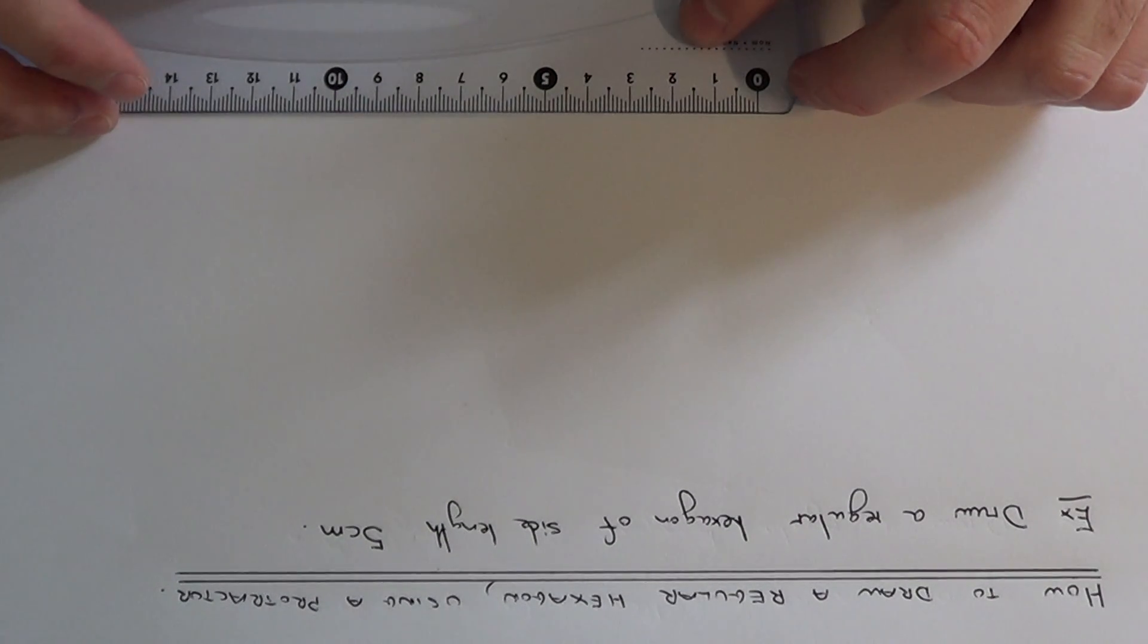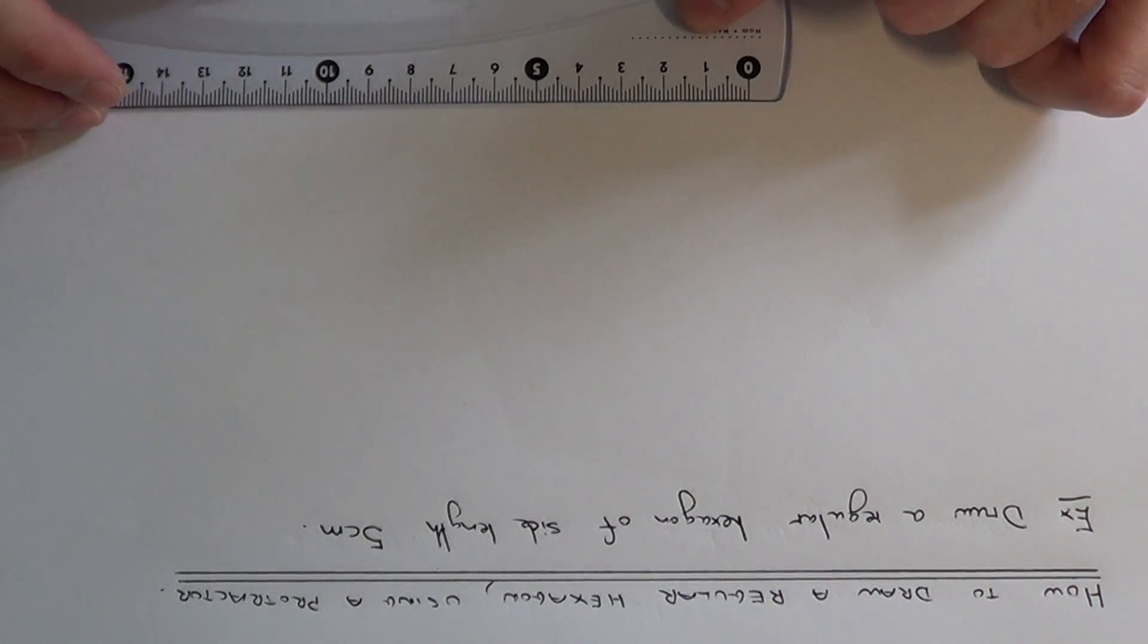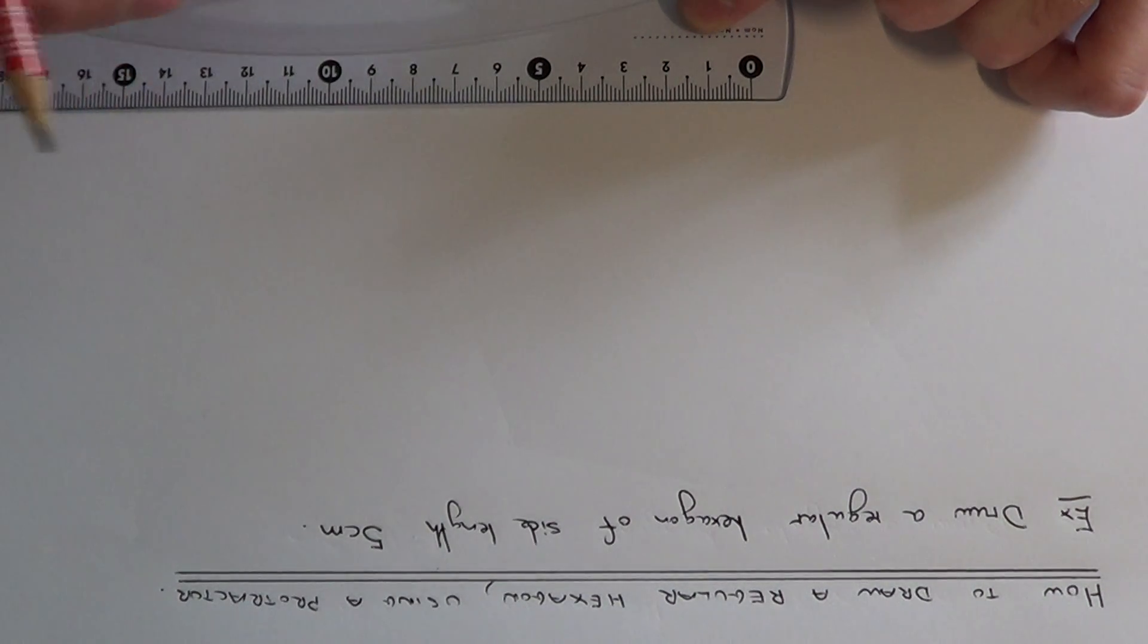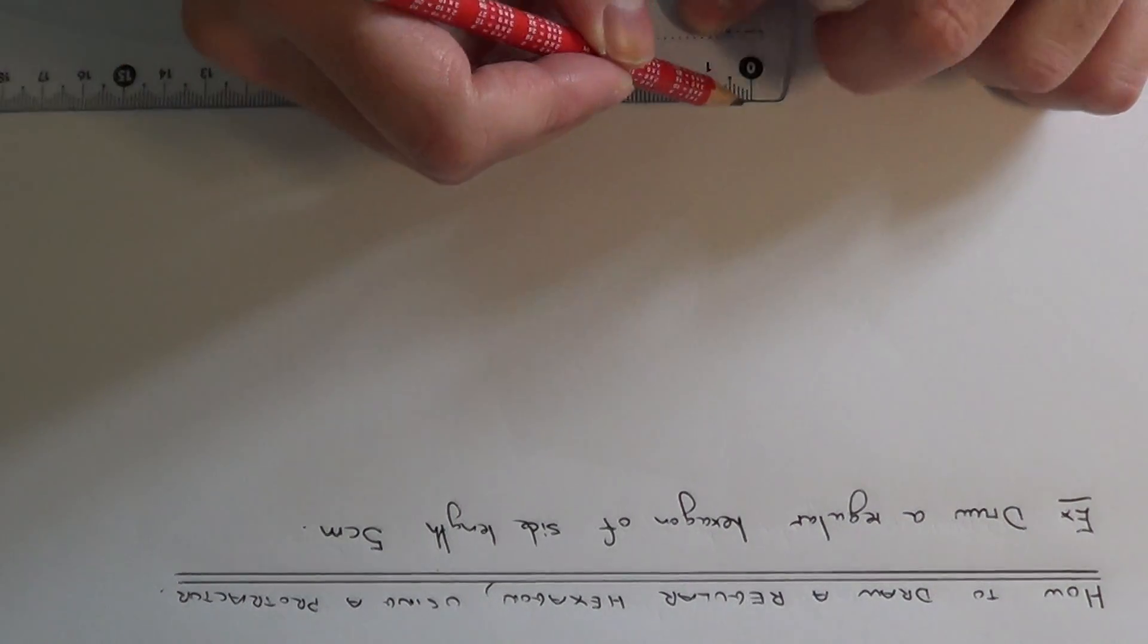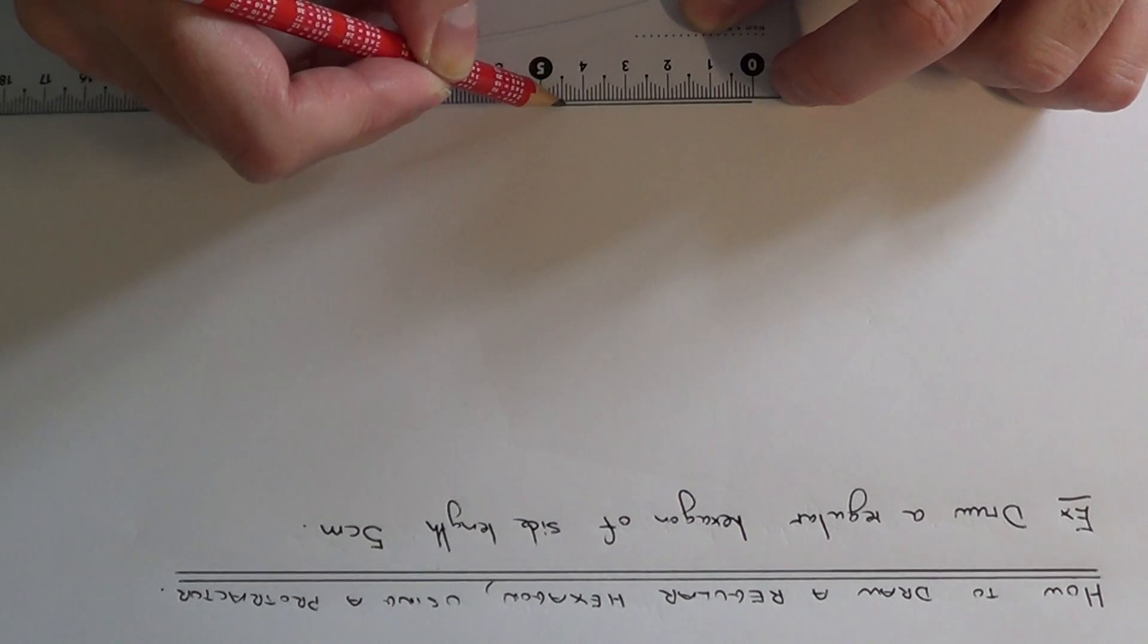First of all we can start anywhere on our page. I'm just going to start at the bottom of the page, and let's make our first side 5cm long. There's our first side.